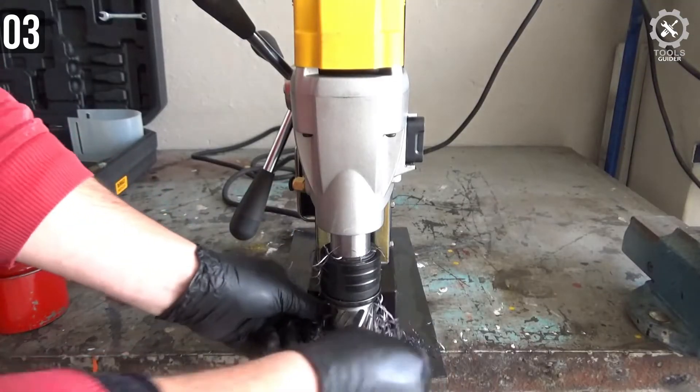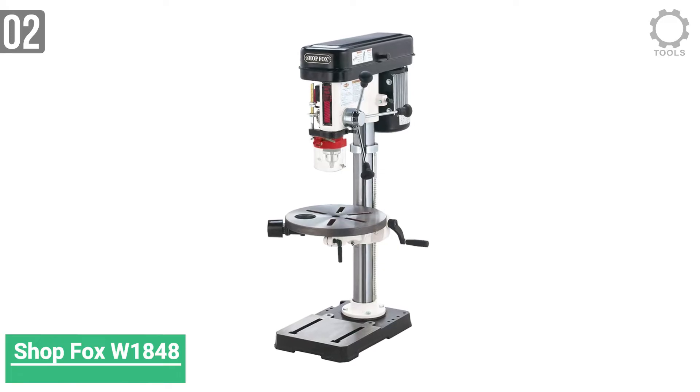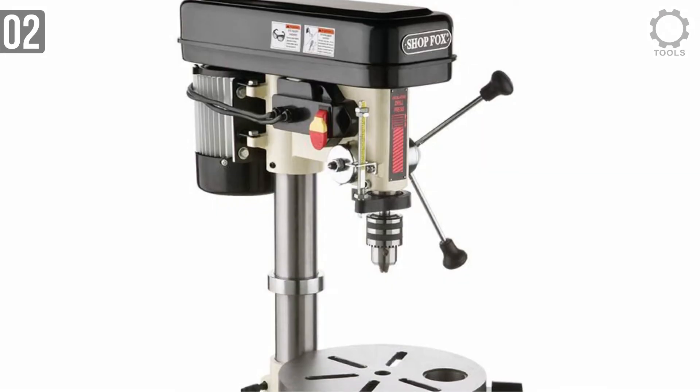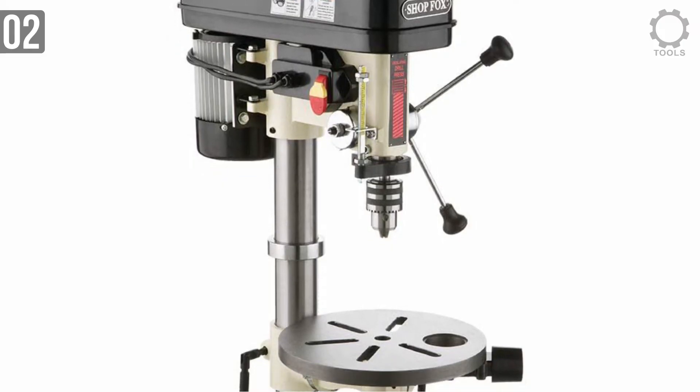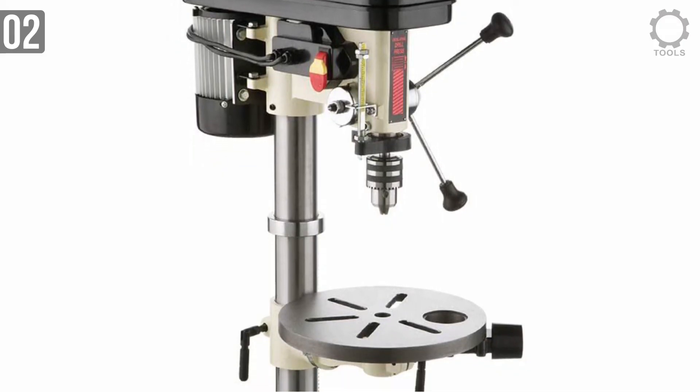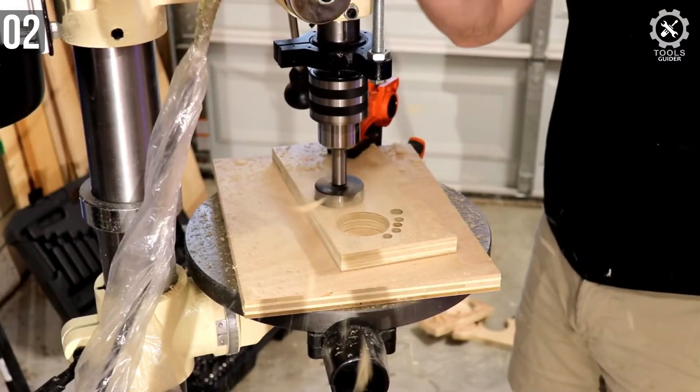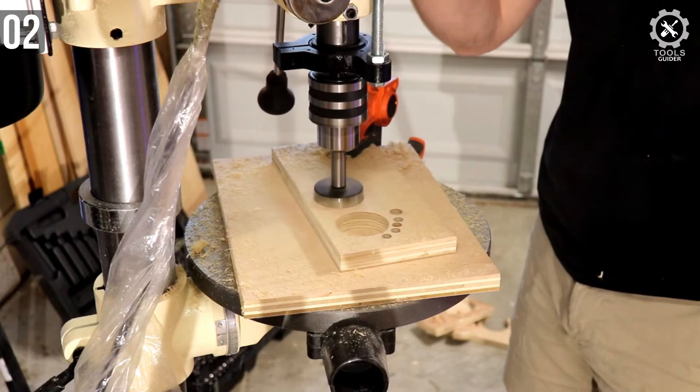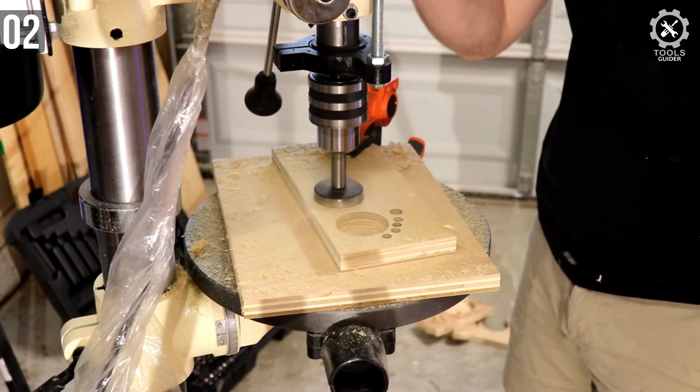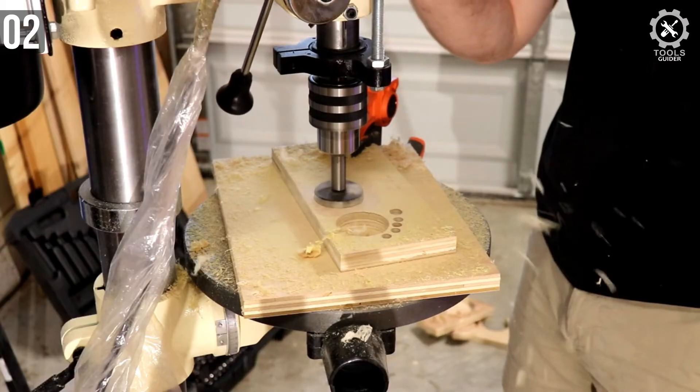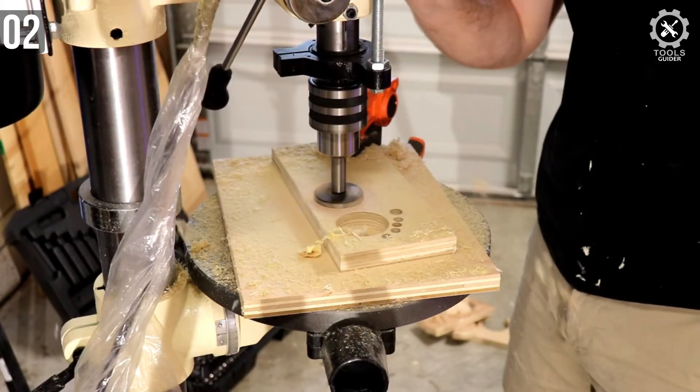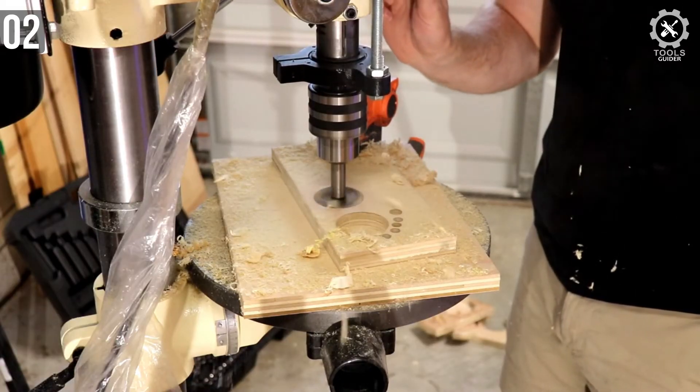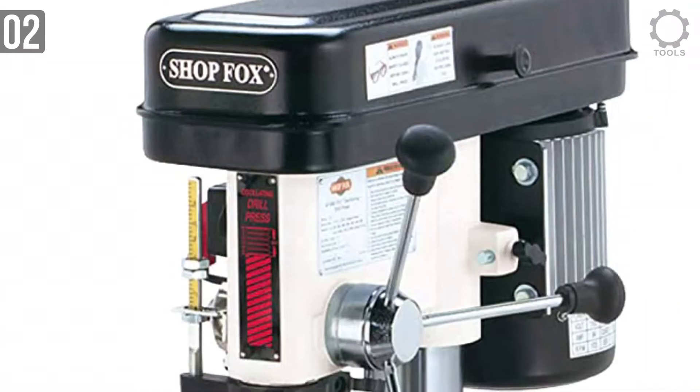Number two: Shop Fox W1848 Oscillating Floor Drill Press. Featuring pretty solid construction, this floor drill press offers reliable operation and dependable performance. Its powerful 3/4 HP motor features variable speed and as such can be used in 12 different settings between 250 and 3050 RPM. The machine has the overall height of 63 inches and a large 12 3/8 inch diameter table that can be tilted 90 degrees to both right and left.